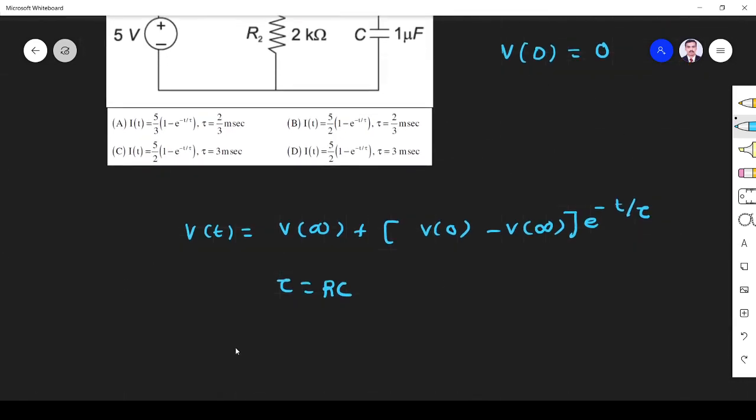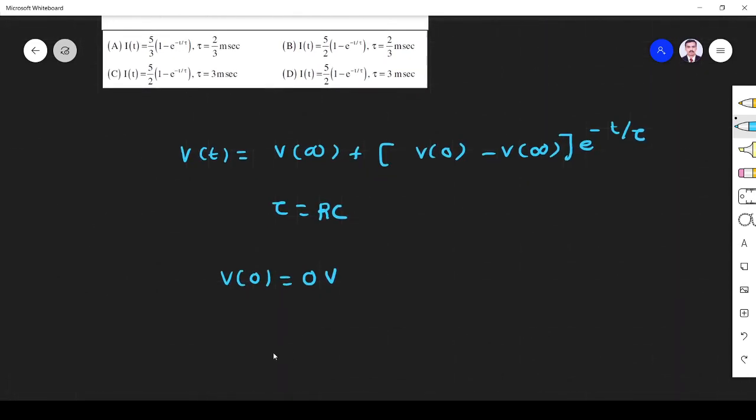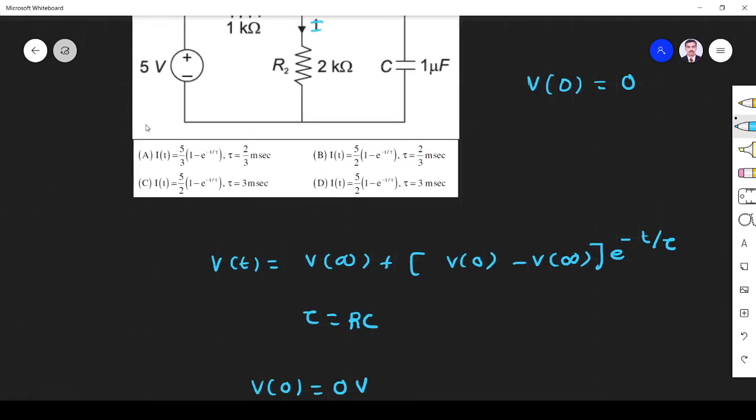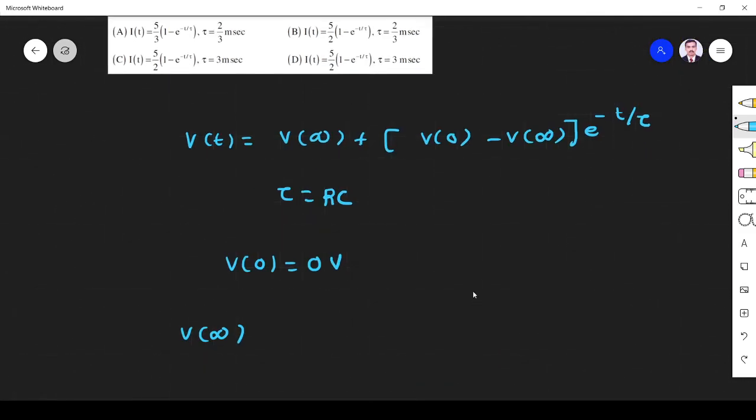So I found already V(0), initial voltage is 0, 0 volt. Next I find V(∞). V(∞) is nothing but steady state voltage, right? So under steady state condition, when t tends to infinity, what will happen? Under steady state capacitor is open. So what happens? The diagram becomes like this.